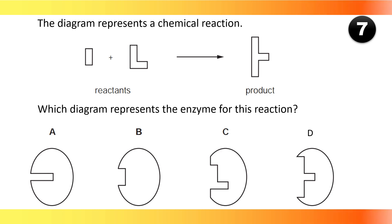The diagram represents a chemical reaction. Which diagram represents the enzyme for this reaction? The answer is B.